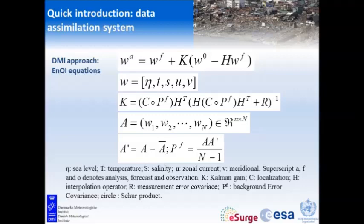Just a few equations — these will be almost the only equations in this presentation. We have some state variables: sea level, temperature, salinity, and velocities. We both have some observations and we have the model values for them. The idea with the ensemble optimal interpolation is to take the optimal combination of the forecast and observations and put them together to form an analysis.